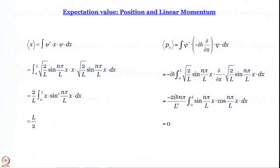We have already learned the expectation values of position and linear momentum for particle in a box for the nth level. For position, no matter what n is, the expectation value is L/2 — meaning if we perform a large number of experiments, the average will be L/2. The average value of linear momentum is 0. This does not mean the particle is not moving; it means the probability of the particle moving in the positive x direction is exactly equal to that of moving in the negative x direction.